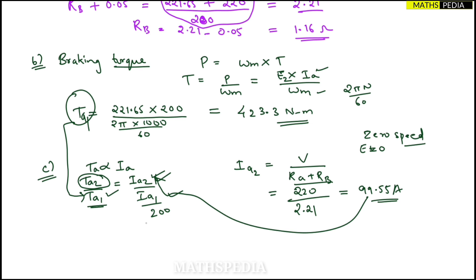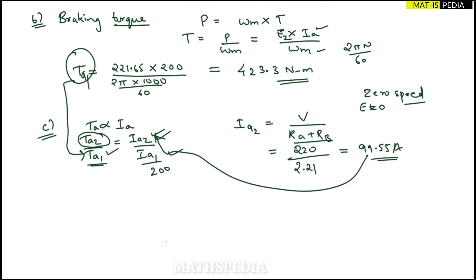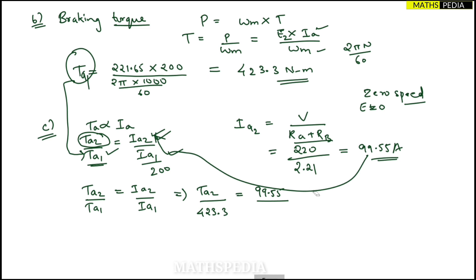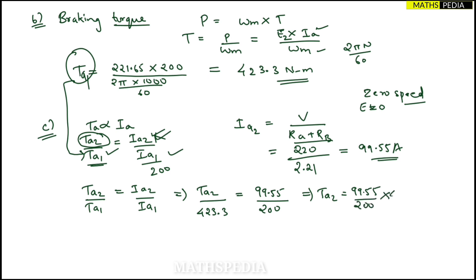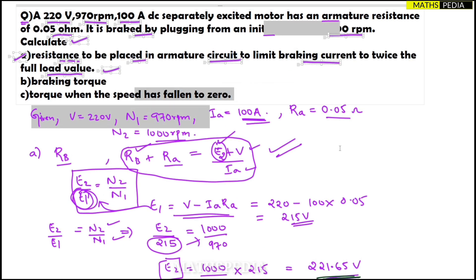Now substituting all values: Ta2 / 423.3 = 99.55 / 200. Therefore Ta2 = (99.55 / 200) × 423.3 = 210.7 Newton meter. This is the braking torque when the speed has fallen to zero. The entire problem is now complete.